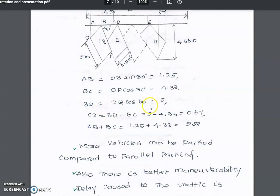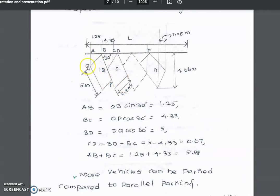For the calculations: point A is the first starting place of the vehicle. AB = OB sin(30°) = 1.25m. BC = OP cos(30°) = 4.33m. BD = DQ cos(60°) = 5m. Therefore, CD = BD - BC = 5 - 4.33 = 0.67m. And AB + BC = 1.25 + 4.33 = 5.58m.